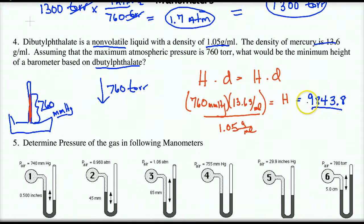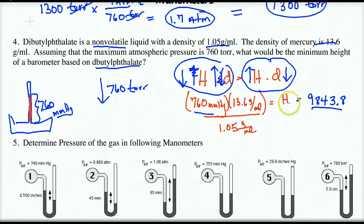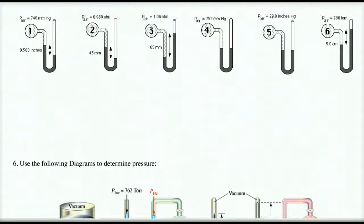It's going to take a lot more volume. Higher the density, lower the height; lower the density, higher the height. If this value decreases as much as that increases, they equal each other — that's the inverse relationship. Rounding to two significant figures: 9,800 millimeters is the minimum height of di-butyl phthalate. That's what we solved for, and that's all I wanted to do on this worksheet.